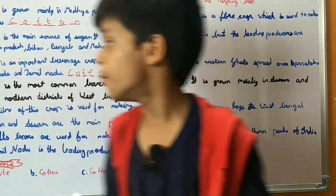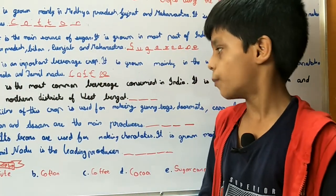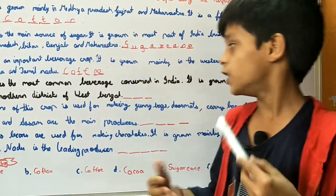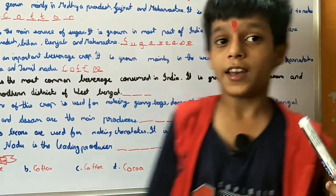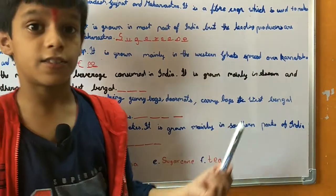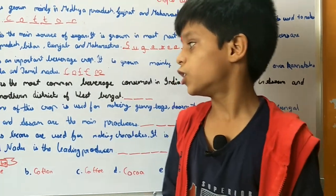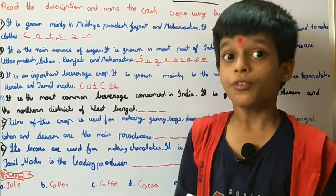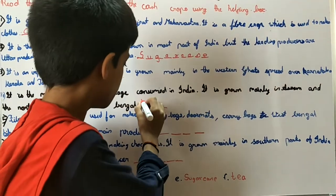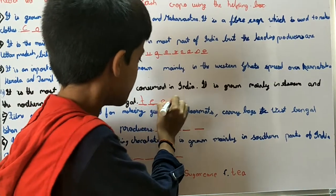Number 4: It is the most common beverage consumed in India. It is grown mainly in Assam and the northern districts of West Bengal. So friends, the answer is Tea.